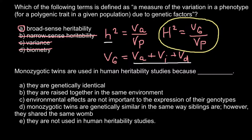Now we can move to the second question: monozygotic twins are used in human heritability studies because — and here are five answers to choose from. Answer A: they are genetically identical. Answer B: they are raised together in the same environment. Answer C: environmental effects are not important to the expression of the genotypes. Answer D: monozygotic twins are genetically similar in the same way as siblings. Answer E: they are not used in human heritability studies.